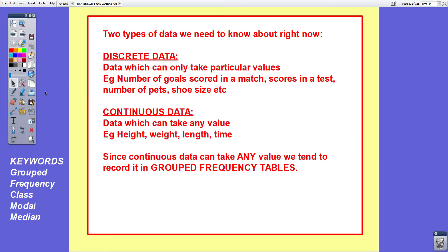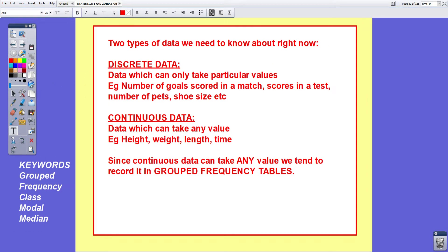The first one is discrete data. Discrete data is data which can only take particular values. For instance the number of goals scored in a football match - you can get one goal, two goals, three goals. You can't get 4.1 or 5.3. Scores in a test, number of pets, shoe size. They can only take particular values, and when they can only take particular values it is called discrete data.